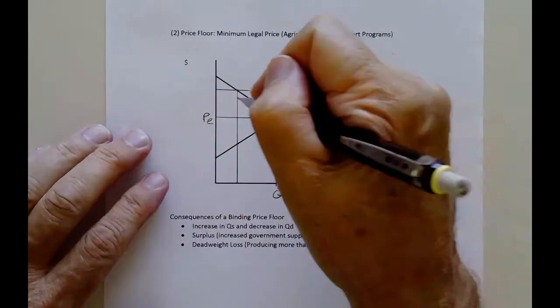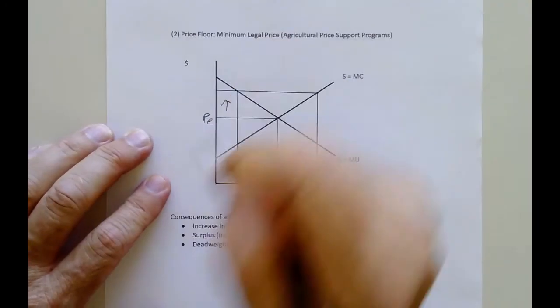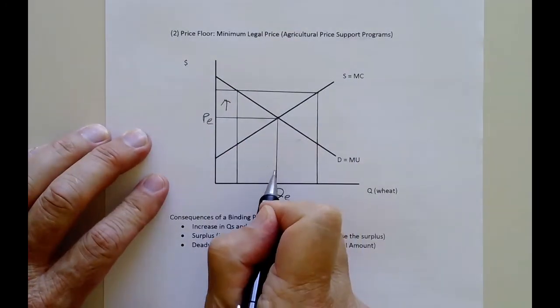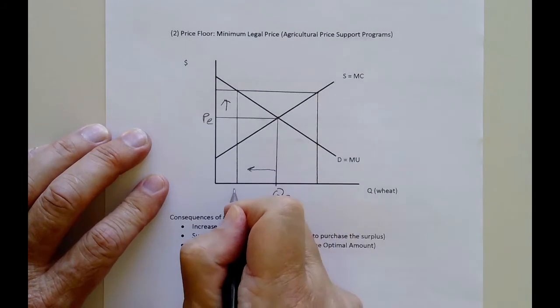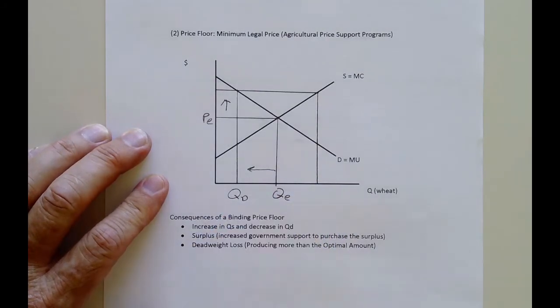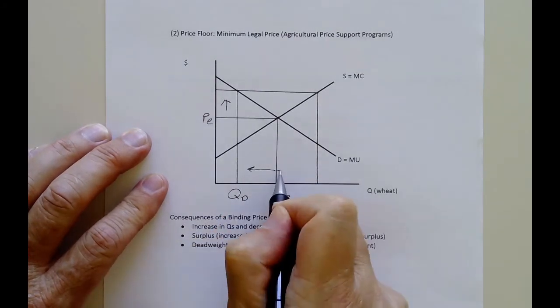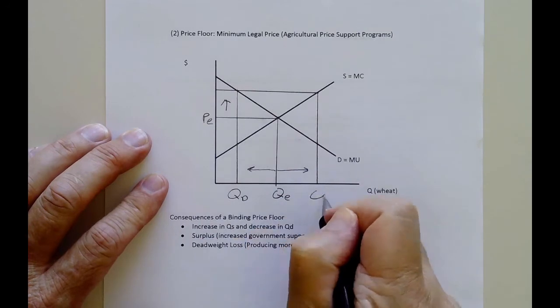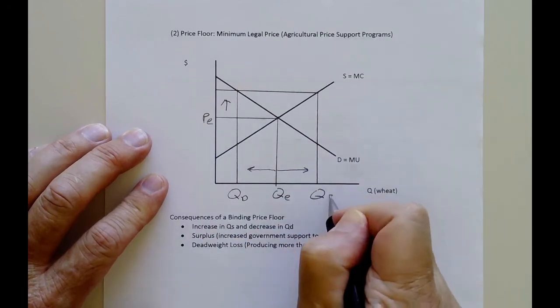So when the price goes up here, it's going to cause a decrease in consumption right there, and it's a decrease in the quantity demanded. And the real damage is over here, where we start producing more wheat that we don't need or want.